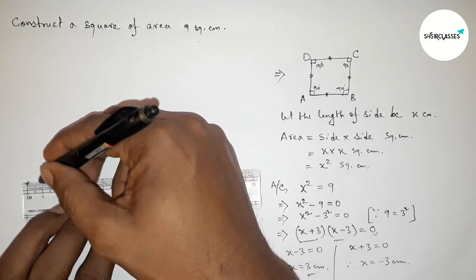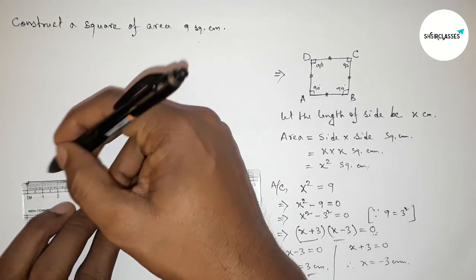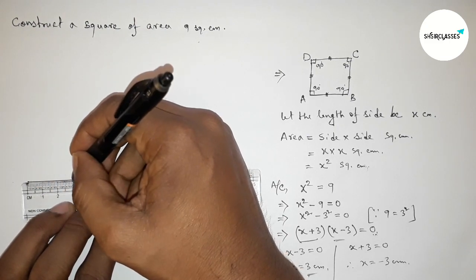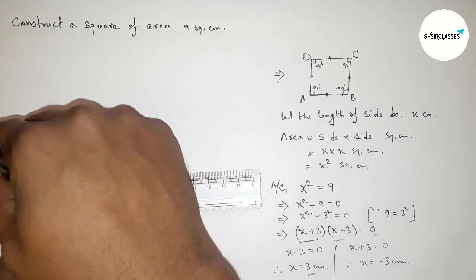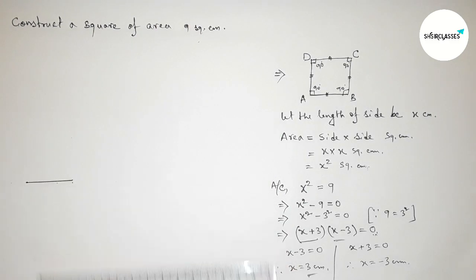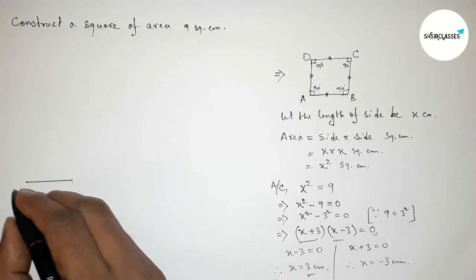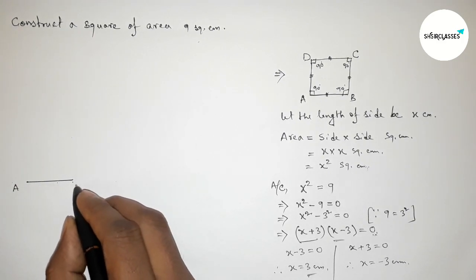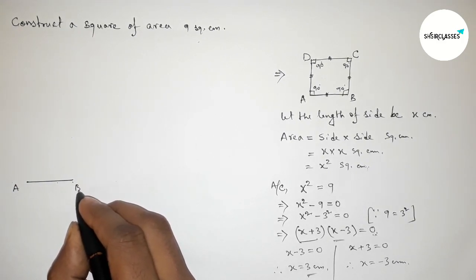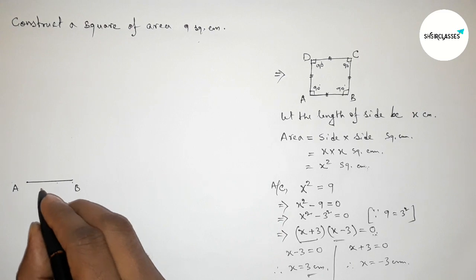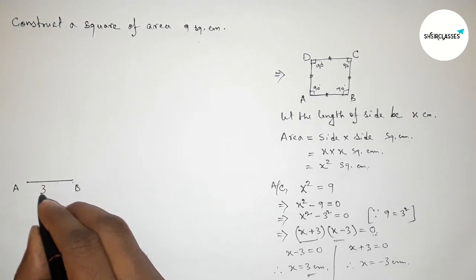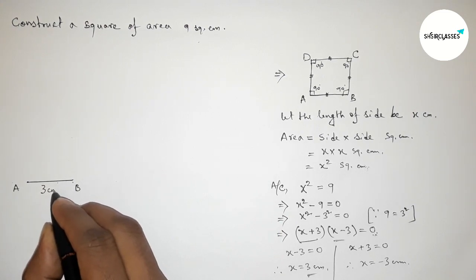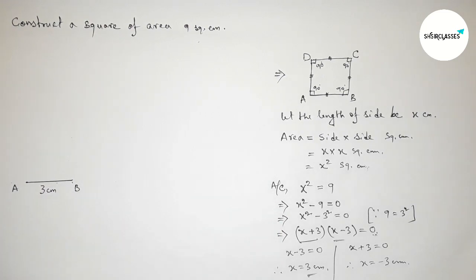Taking point A on one end and point B on the other end, this is our 3 centimeter line segment AB.